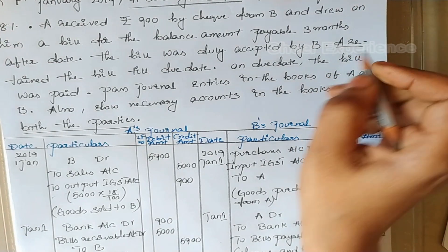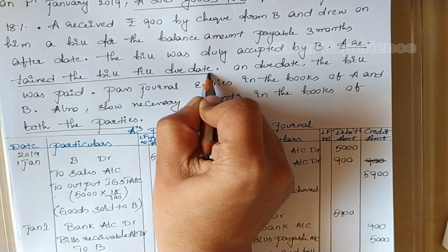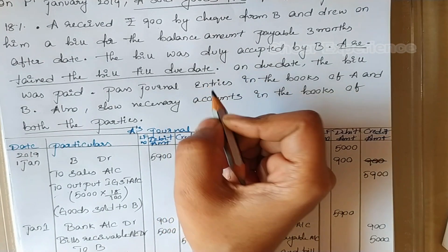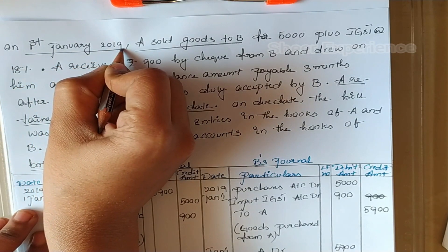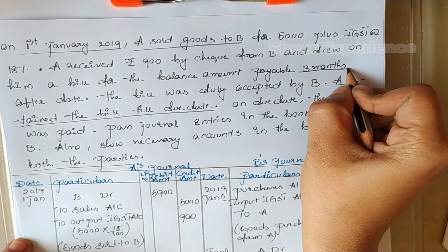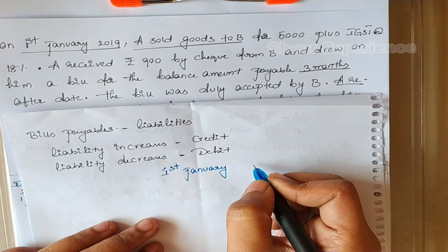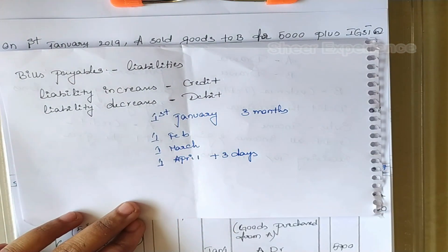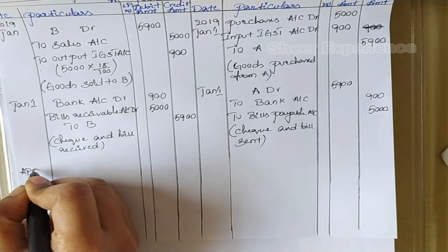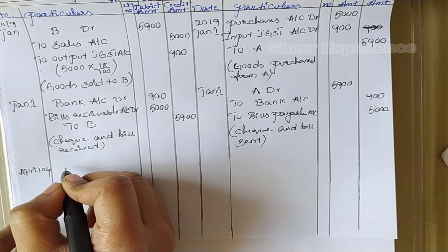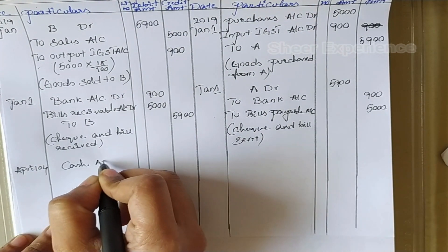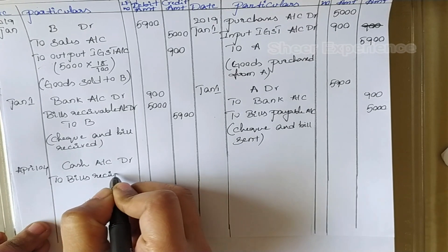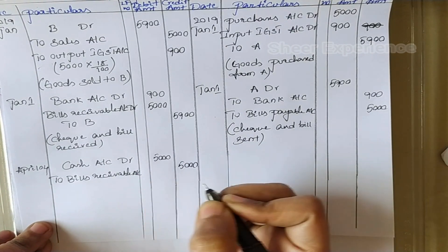A retained the bill till due date. The bill is drawn on 1st January 2019 and the bill period is 3 months. So 3 months from January 1st is 1st February, 1st March, 1st April. We need to add 3 days grace period, so the due date is April 4th 2019. On April 4th, A received the bill amount from B. Journal in A's books is: Cash Account debit to Bills Receivable Account. Amount is 5000.